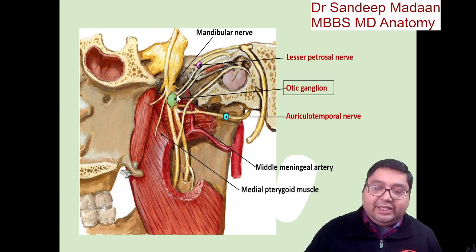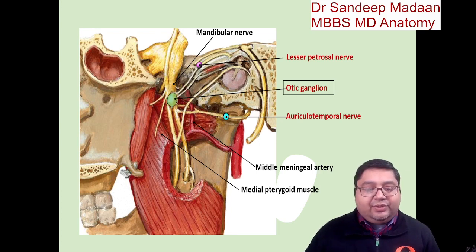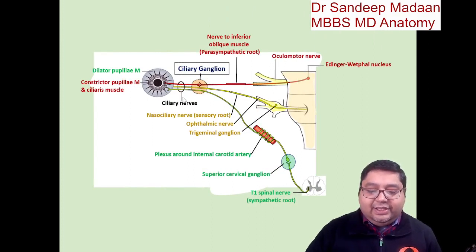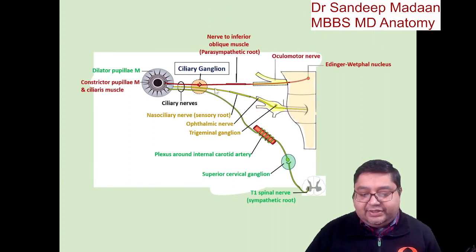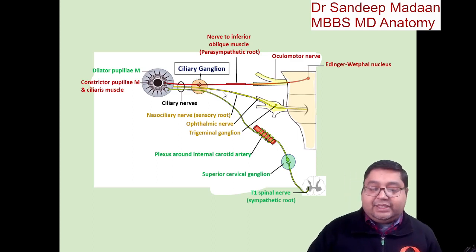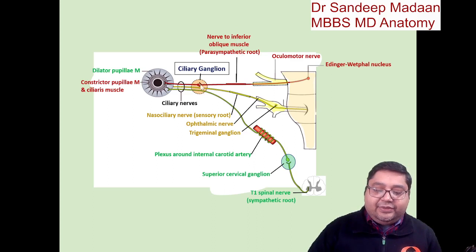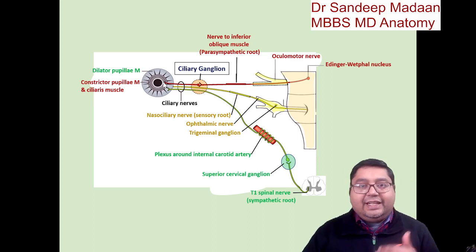Next is the ciliary ganglion, which is held by the nasociliary nerve — making it the topographical nerve. The nasociliary nerve also carries the postganglionic fibers. The preganglionic fibers come from the Edinger-Westphal nucleus, travel along the nerve to inferior oblique, relay in the ciliary ganglion, and the short ciliary nerves then carry the postganglionic fibers.